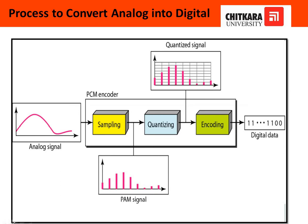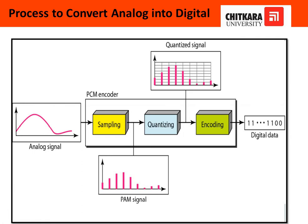If you see this input, the input consists of the analog signal and the output consists of digital data which is in the form of 1s and 0s. These three blocks are responsible for converting analog into digital — that is sampling, quantizing, and encoding.